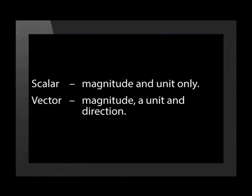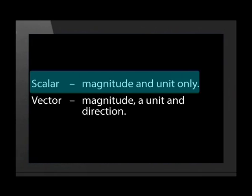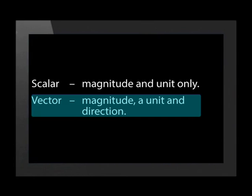To recap these two terms: a scalar quantity has magnitude and a unit, while a vector quantity has magnitude, a unit, and direction.